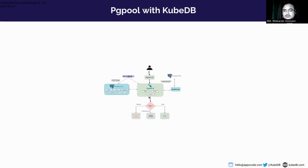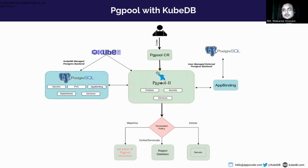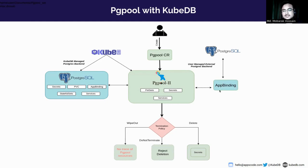Now let's see what we can do with KubeDB PGPool. When a user applies a PGPool CR or custom resource, KubeDB provisioner will create a PetSet, which is a custom resource made by AppsCode. It is basically a replacement for a StatefulSet but can do more things. KubeDB provisioner will also create necessary secrets, services, etc. If you use KubeDB Postgres, you just need to mention the app binding KubeDB made for Postgres in the PGPool CR and KubeDB will do the rest. But if you use an external Postgres, you need to mention the app binding and also create that binding for PGPool.